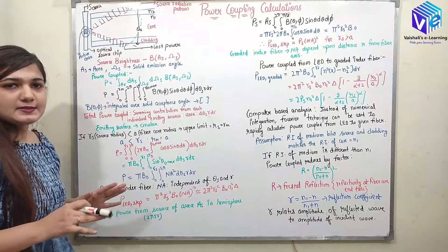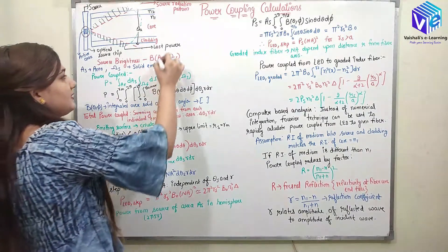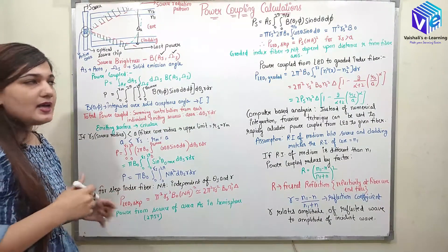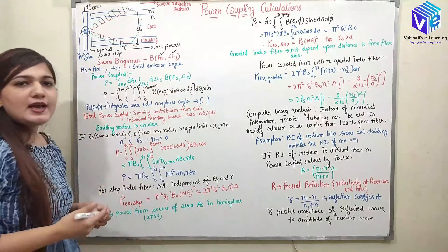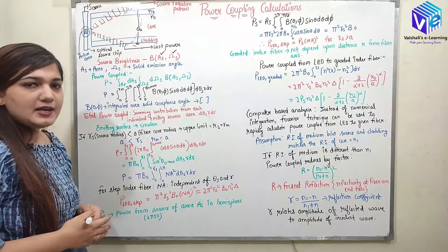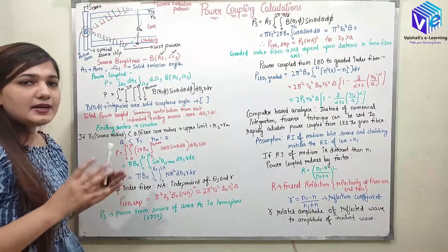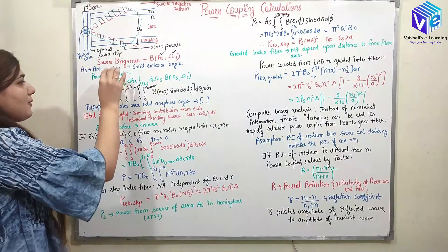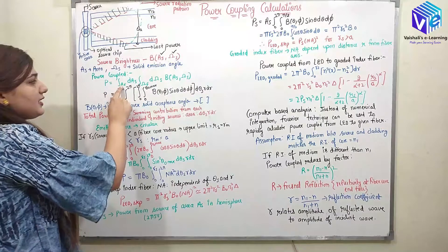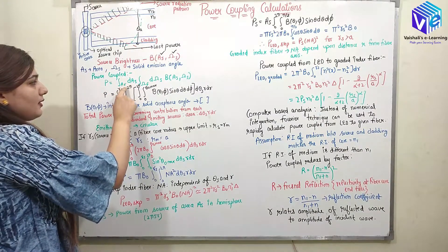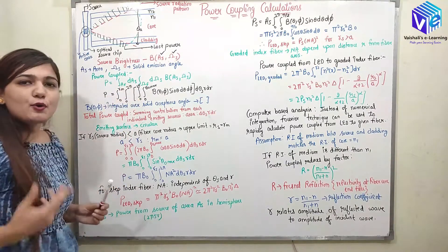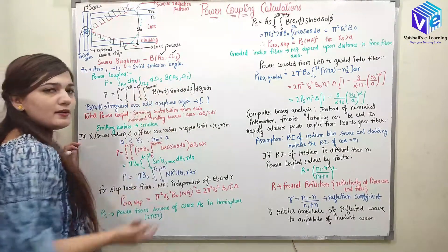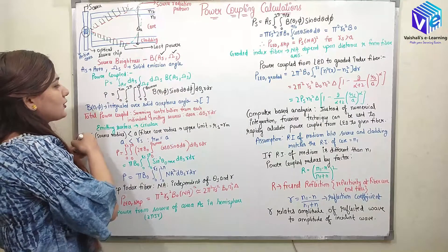Now the source brightness is represented in terms of A_S and Omega. A_S is the area and Omega represents the solid emission angle in 3D. We have 3D emission but here we are considering circular emission only. The power coupled can be calculated using the integration over A_F of dA_S over A_F and d_Omega times B(A_S, Omega) over Omega. This is how we get the total power coupled.